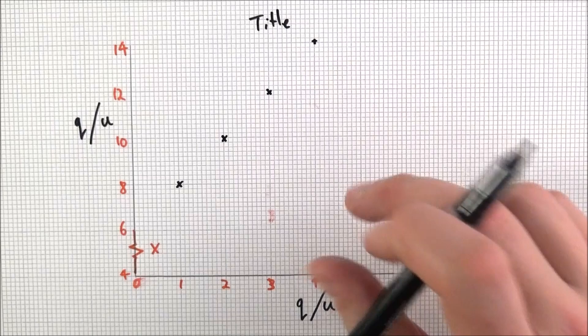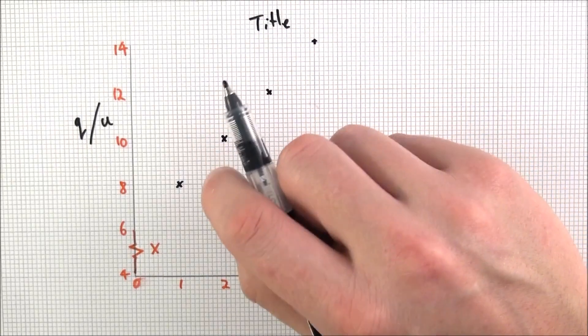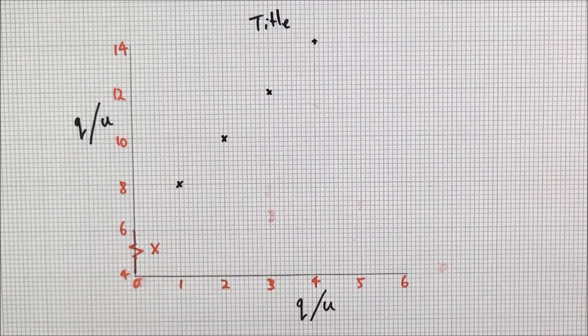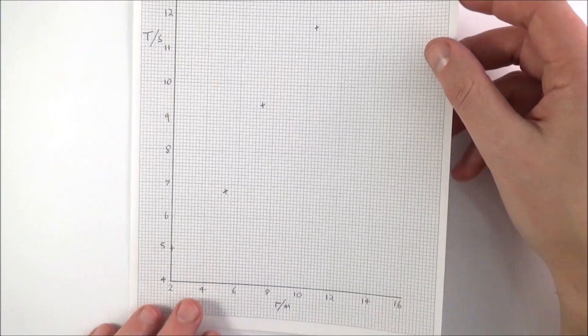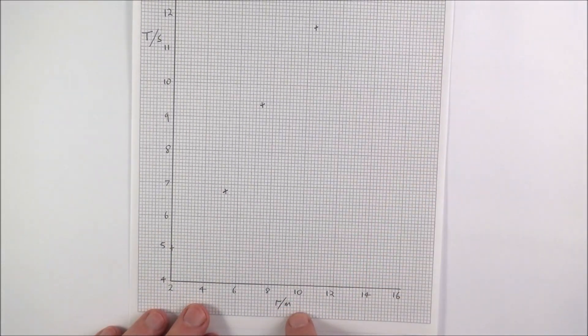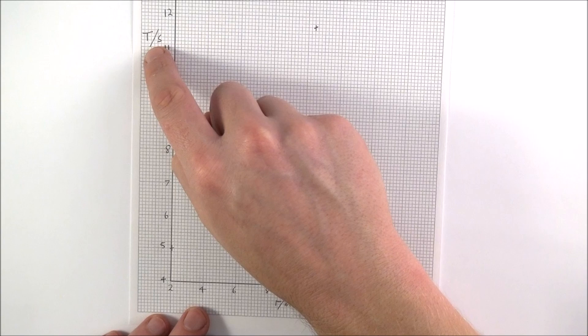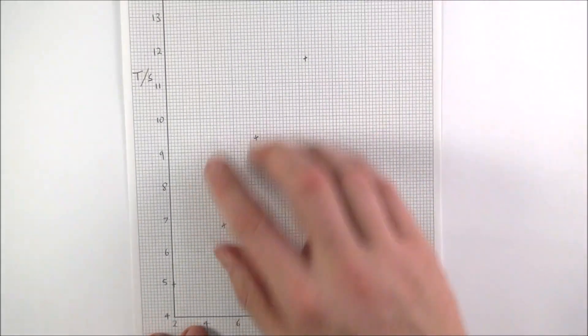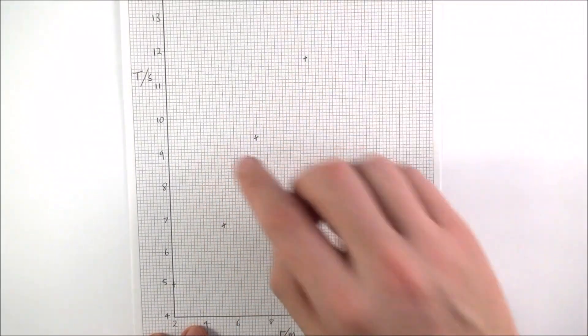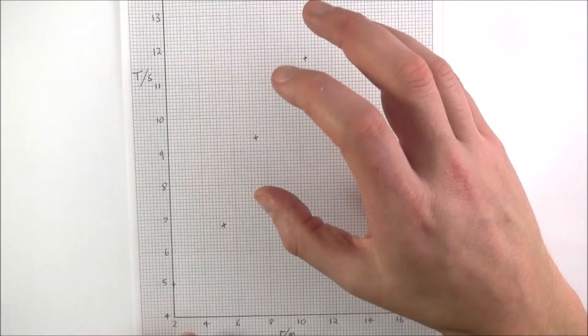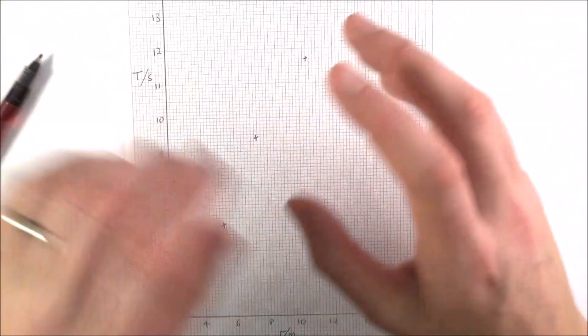And then what you need to do is maybe think about an appropriate line of best fit. So here I have my graph. What I have is maybe r in meters and time in seconds, and what I've got is some data plotted on a fairly large graph. Now when it comes to a line of best fit, there are two sorts that we can really have.